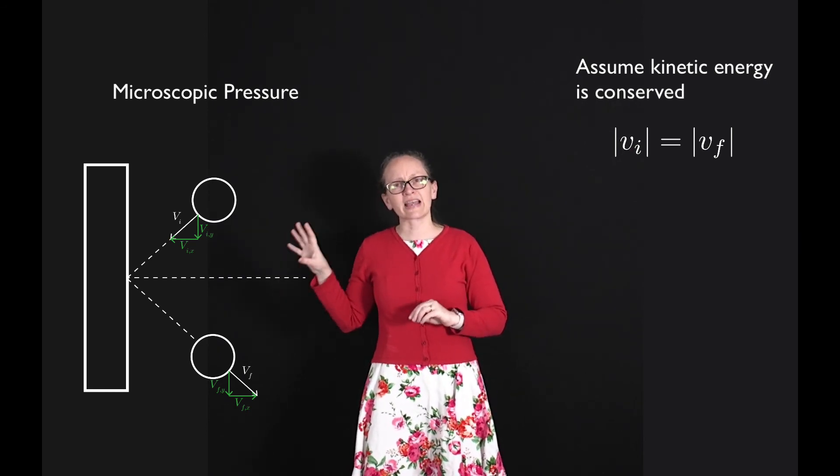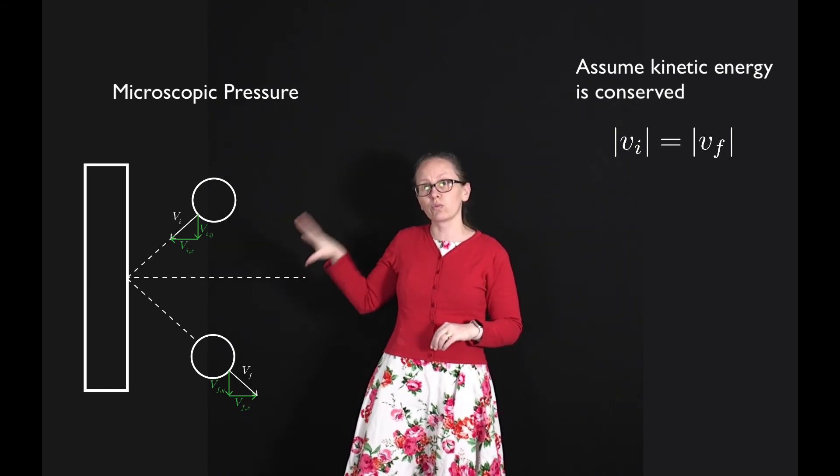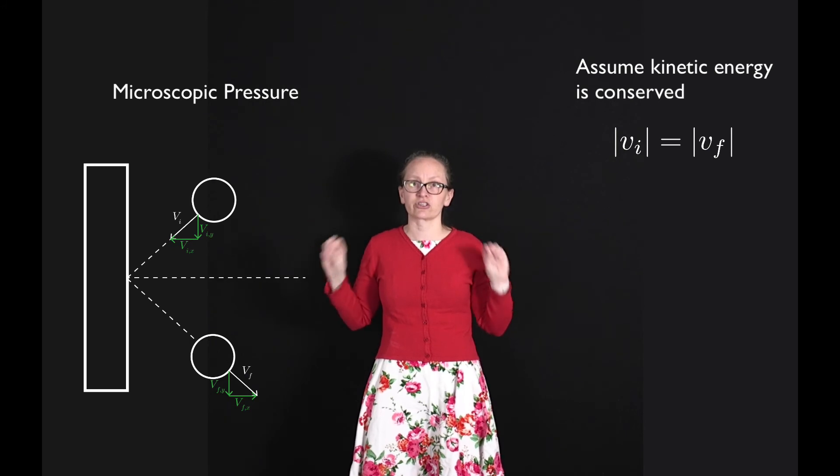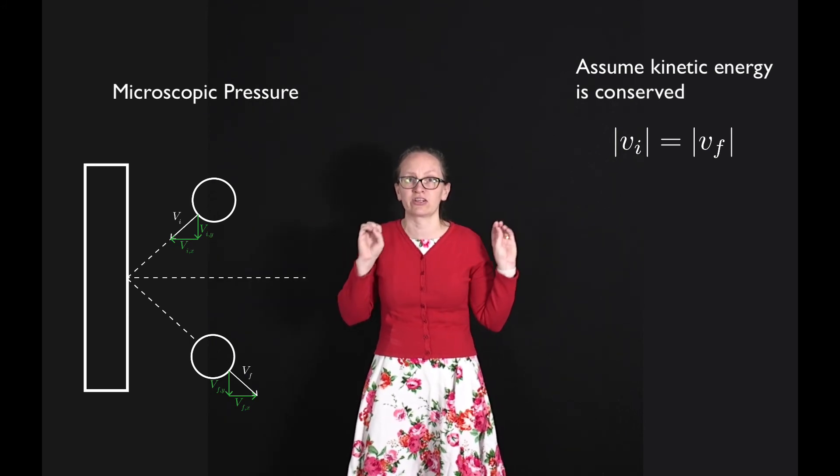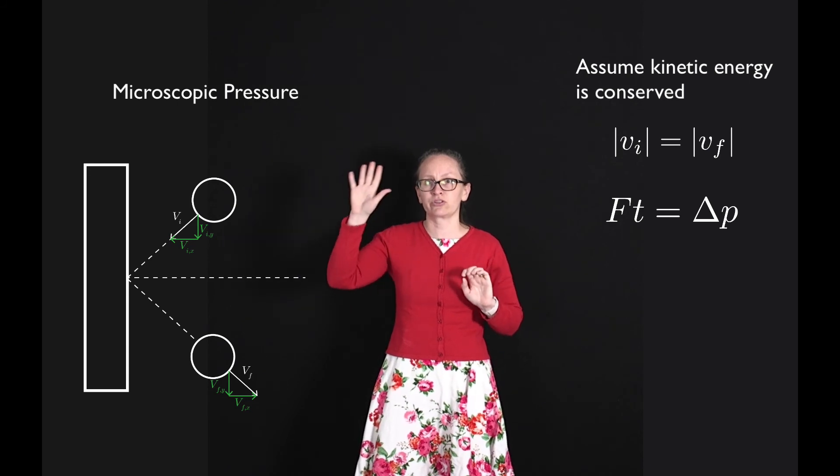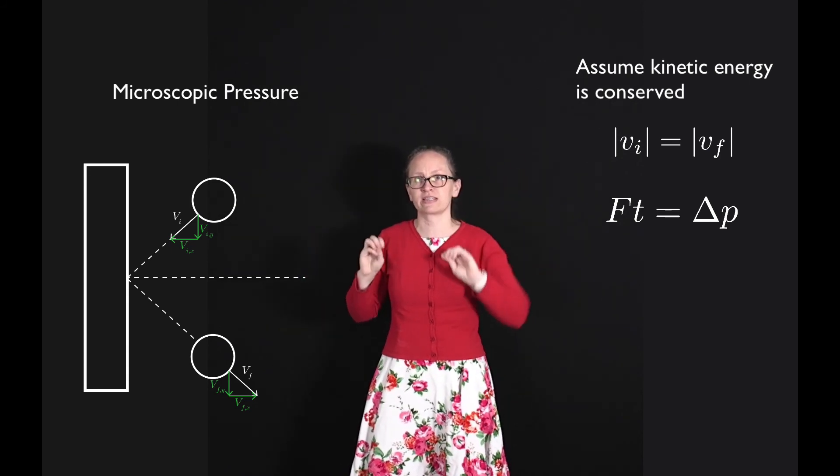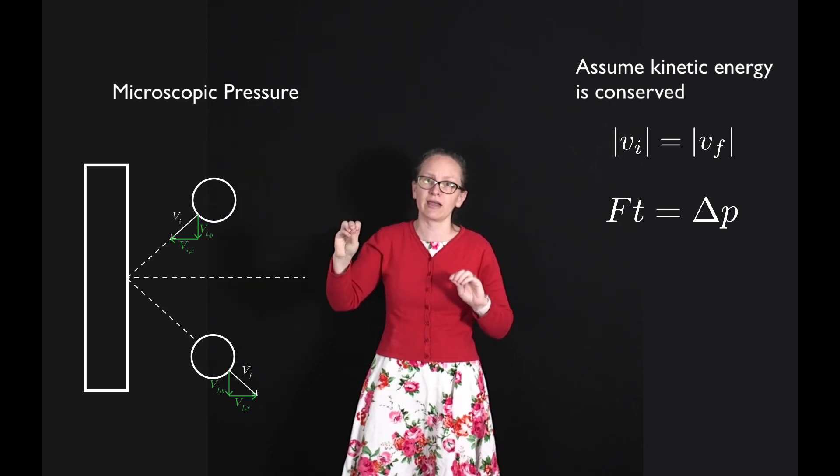So let's calculate the force that a single molecule will exert on the wall during this collision. To do that, we'll need to use the equation for impulse. The force times the time is equal to the change in momentum. So we can rearrange this and write, the force is equal to the change in momentum over the time, which in this case is equal to the mass times the final velocity.